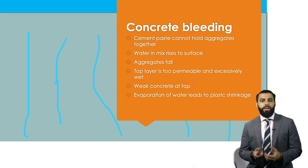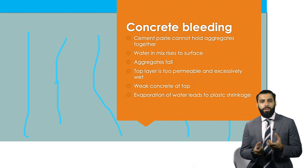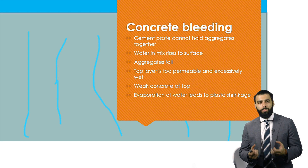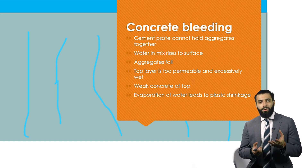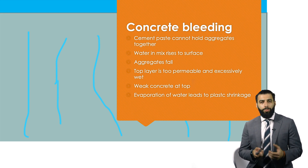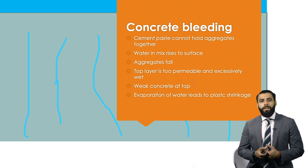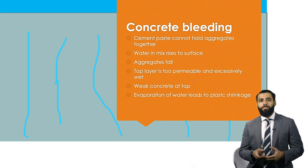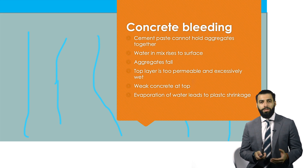Concrete bleeding is related to segregation. When the cement paste cannot hold the large aggregates and segregation takes place, the aggregates drop down and water rises in the concrete mix. This means you have more water on the surface, making it more permeable and weaker — this is what we refer to as concrete bleeding. When water rises on the surface due to bleeding, you get more evaporation, and hence you are likely to experience more plastic shrinkage cracking.